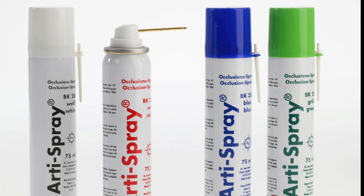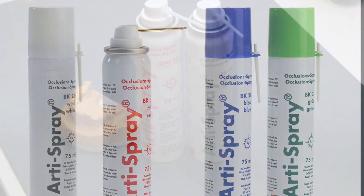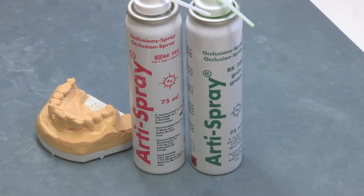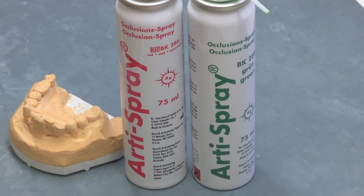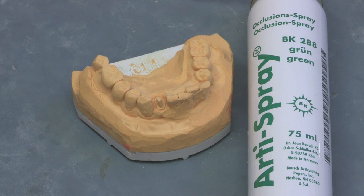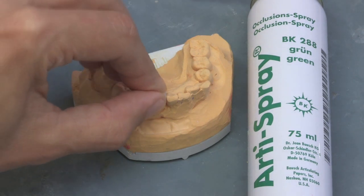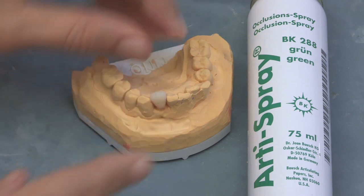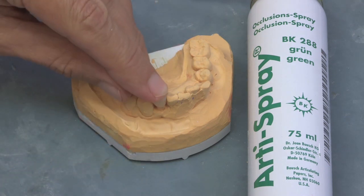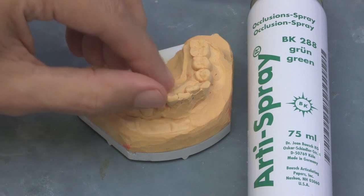Arti Spray is a universal color indicator to test the occlusal contacts and accuracy of fit of crowns and bridges. Arti Spray is easy to administer and leaves a thin colored film which can easily be removed with water, leaving no trace of residues.